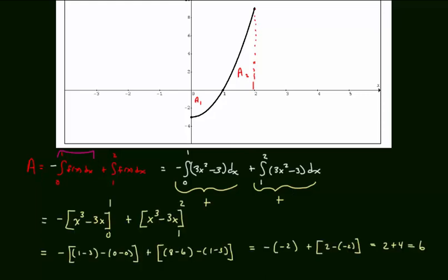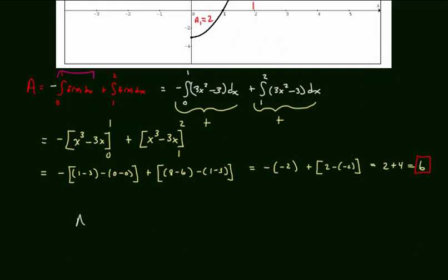I've worked out the antiderivatives and the fundamental theorem of calculus part 2, evaluation method. I've plugged it all in and I've got 6. So, a1 was equal to 2 while a2 was equal to 6. The answer is positive 6. But note, the integral from 0 to 2 of 3x squared minus 3 dx is equal to negative 2 plus 4 which equals 2 which is not equal to the area that we sought.